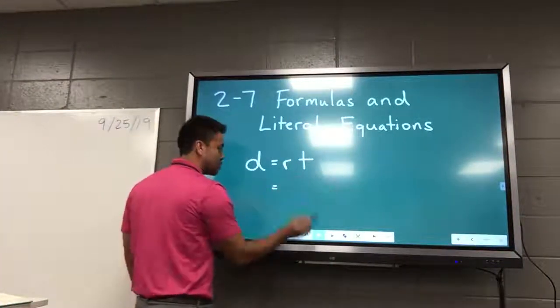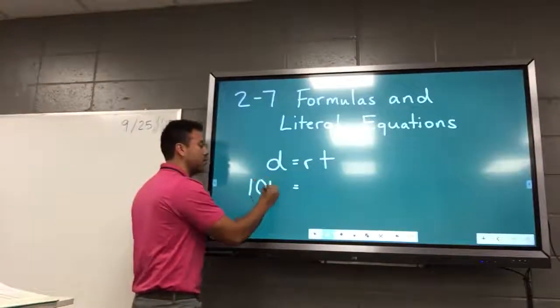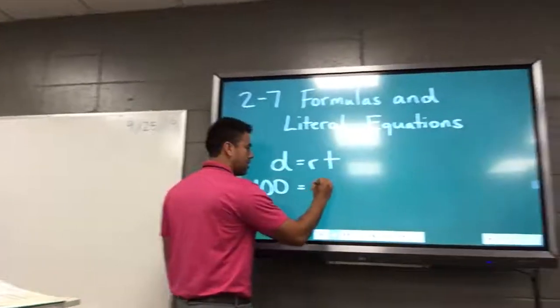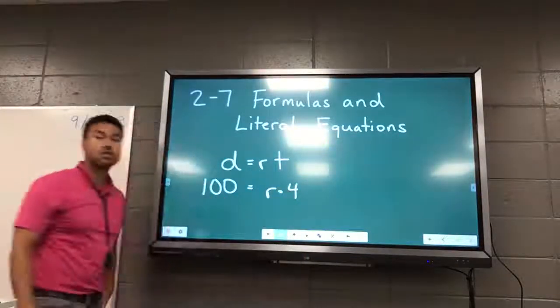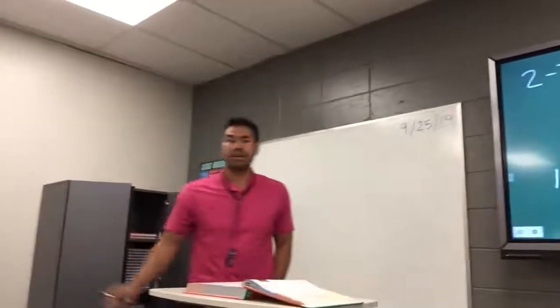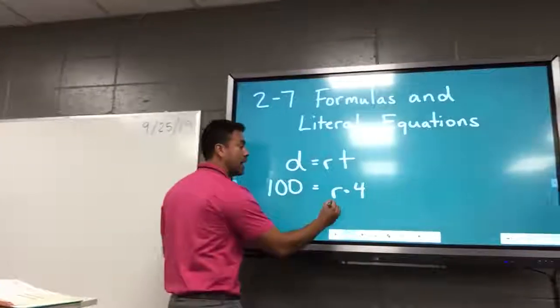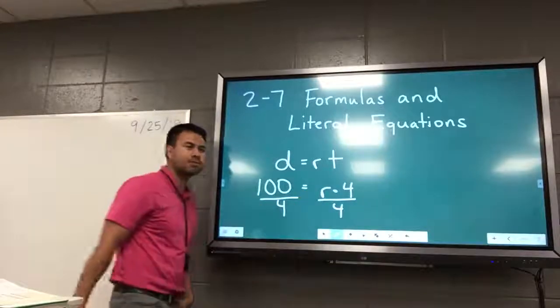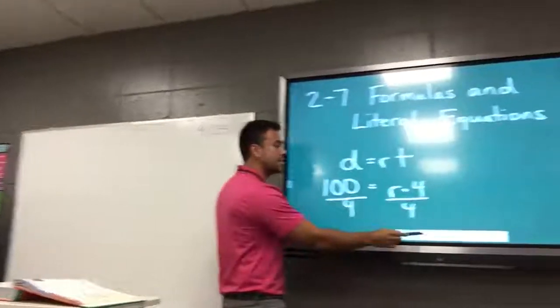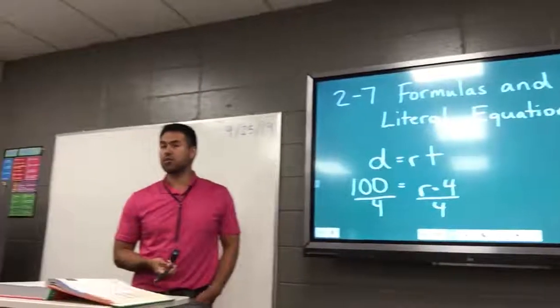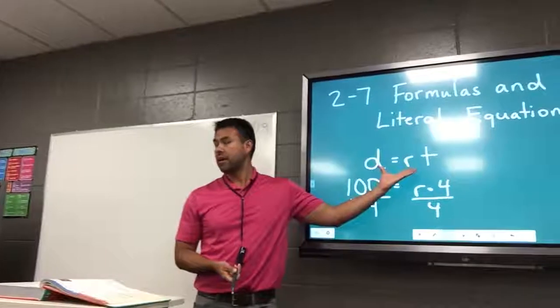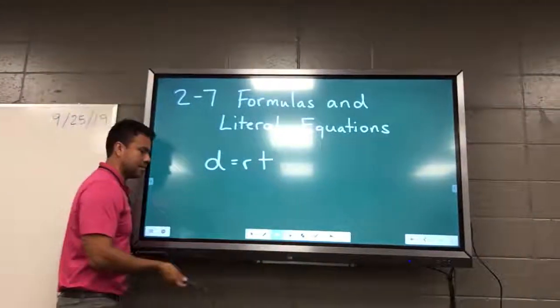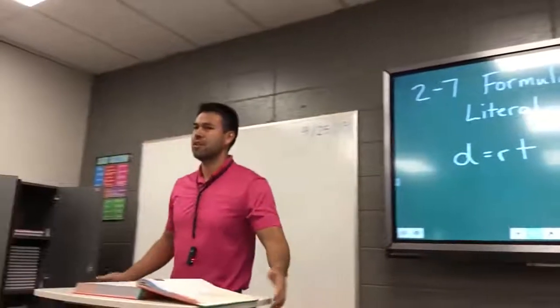But sometimes you get problems, because I traveled 100 miles on my trip and I went for four hours, so T equals four. What was my speed, or what was my rate? So how would you find it? 25. Okay, yeah, divide both sides by four. 100 divided by four would be 25. So that would be my rate, my speed.